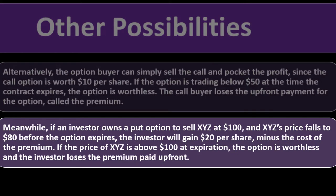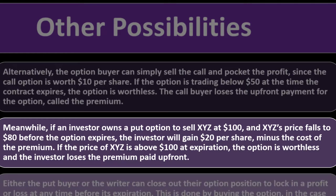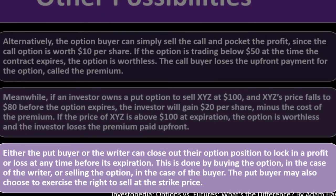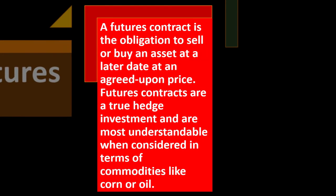For put options: if an investor owns a put option to sell XYZ at $100 and XYZ's price falls to $80 before the option expires, the investor will gain $20 per share minus the cost of the premium. If the price of XYZ is above $100 at expiration, the option is worthless and the investor loses the premium paid upfront. Either the put buyer or writer can close out their option position to lock in a profit or loss at any time before expiration.